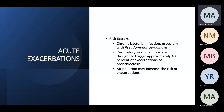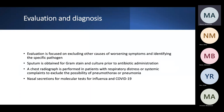Risk factors for exacerbation include chronic bacterial infection, especially Pseudomonas, respiratory viral infections, air pollutants, and cigarette smoking. Evaluation focuses mainly on identifying the causative organism, as bronchiectasis exacerbations differ from COPD — they are primarily driven by infection, since these patients already have bacterial colonizations.